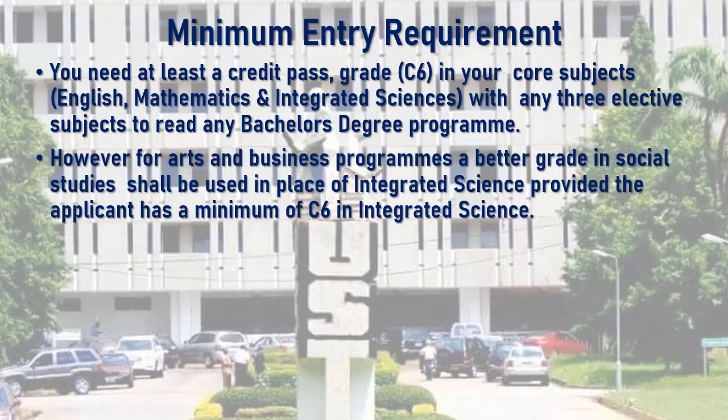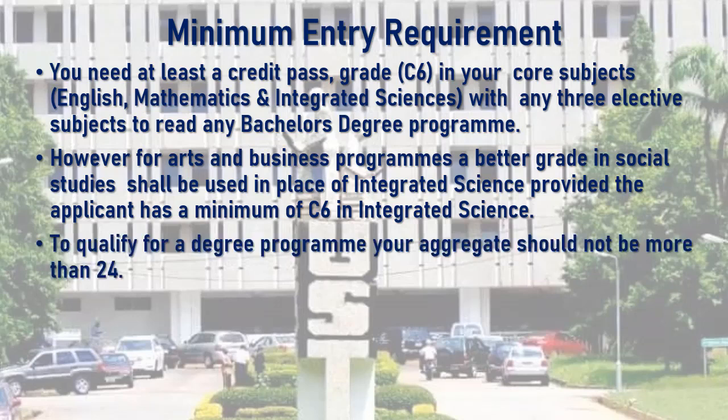However, for arts and business programs, a better grade in social studies shall be used in place of Integrated Science, provided the applicant has a minimum of C6 in Integrated Science. So if you are a general arts or business student applying for an arts-related program such as BA Political Studies, and you have a better grade in social studies than Integrated Science — while still needing at least a C6 — your social studies will be used with English and Mathematics to calculate your final aggregate. Also, to qualify for a degree program, your aggregate should not be more than 24.